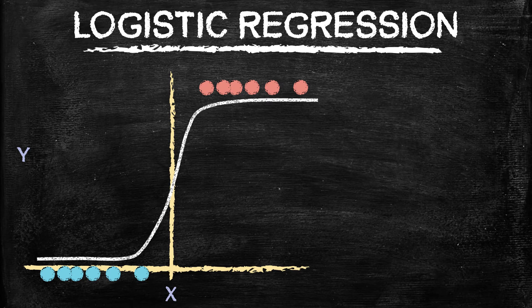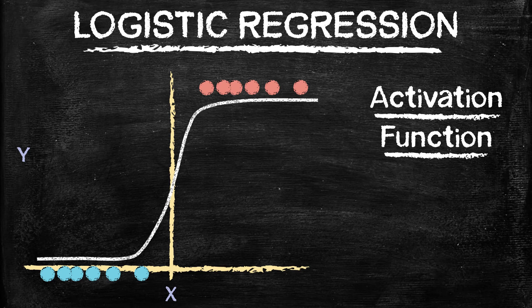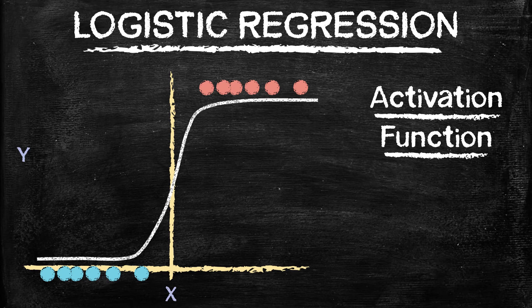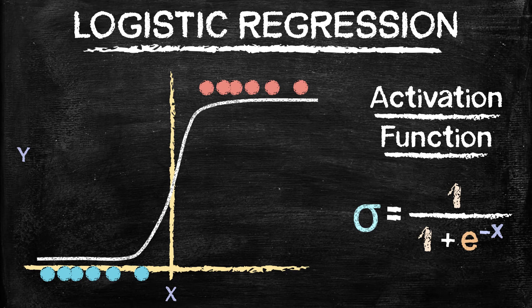And this line is going to be called our activation function. Now, you may have heard of activation function before, but we are going to be using the sigmoid function to give us this line right here. So this little S-shaped line is sigmoid, and sigmoid is equal to 1 over 1 plus e to the negative x.